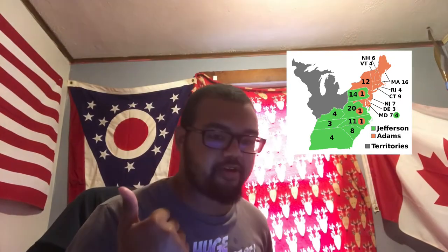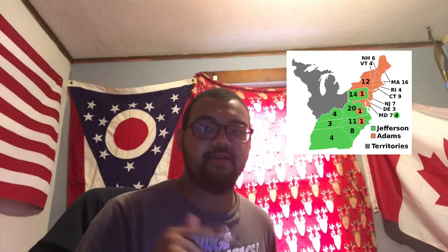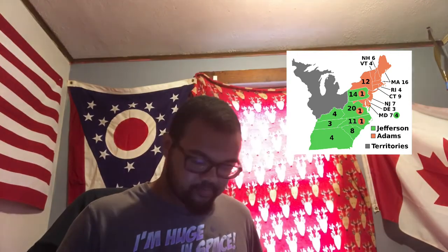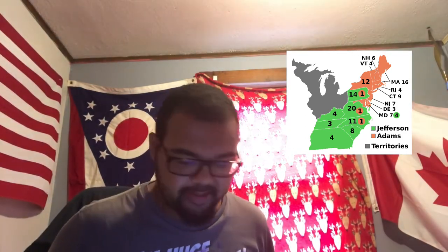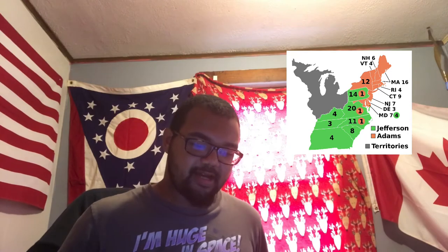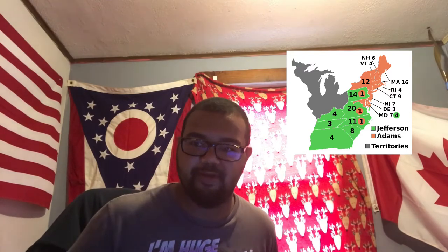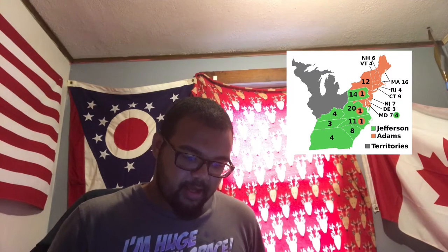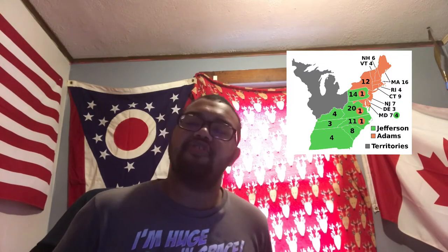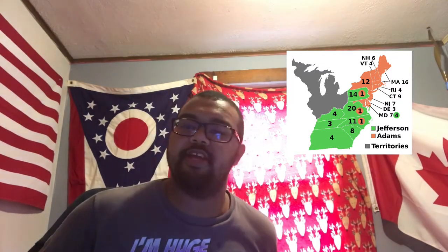Jefferson was the first Secretary of State, the second Vice President, and would end up becoming the third president — but we'll get to that later. Thomas Jefferson was a Democratic-Republican. He got 68 electoral college votes, just short by a couple compared to Adams.